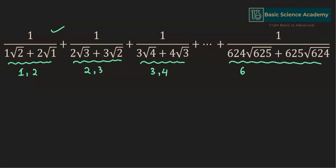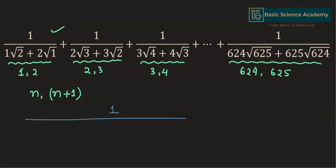And at the end, we have 6⁴ and 6⁵. Now let's consider these two consecutive numbers as n and n plus 1. In each of these terms, 1 is divided by the smaller number n multiplied by the square root of the larger number n plus 1, plus the larger number n plus 1 multiplied by the square root of the smaller number n.